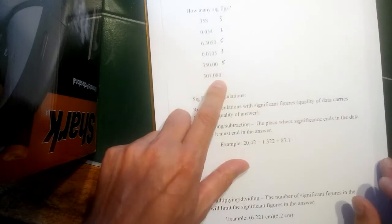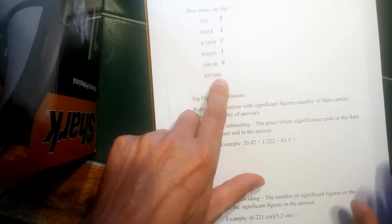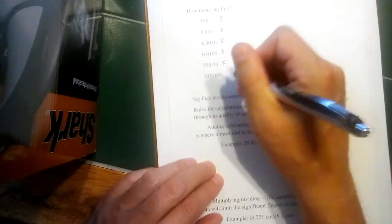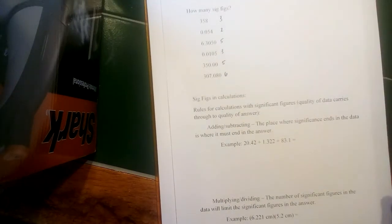And then 307.080, a trapped zero and a zero to the right in a number with a decimal. Those would all count as well. That would be six.